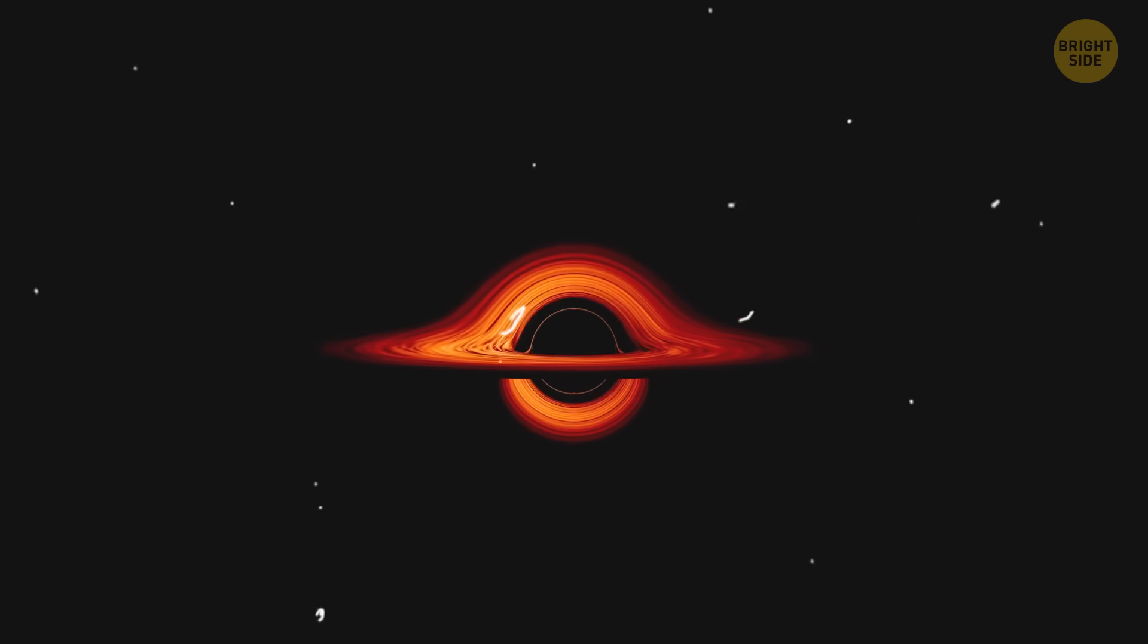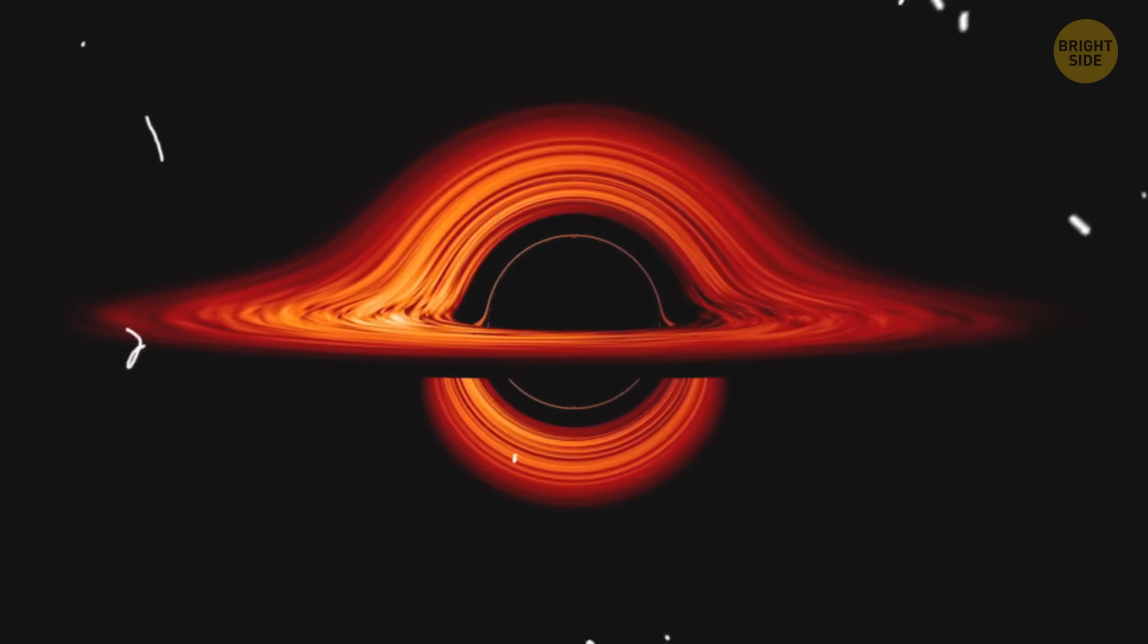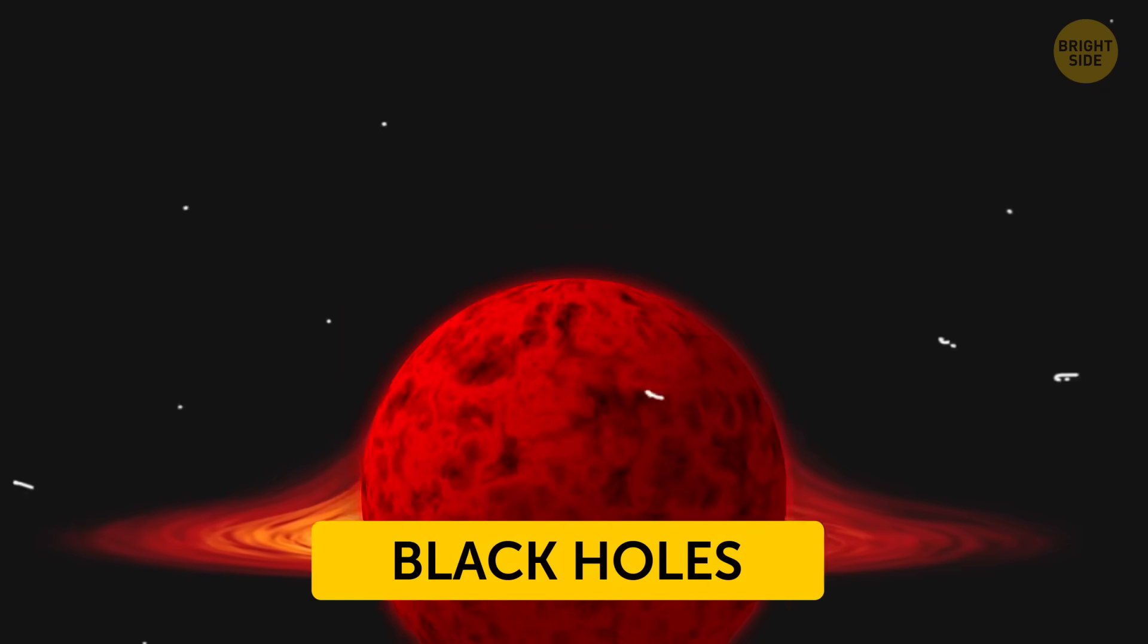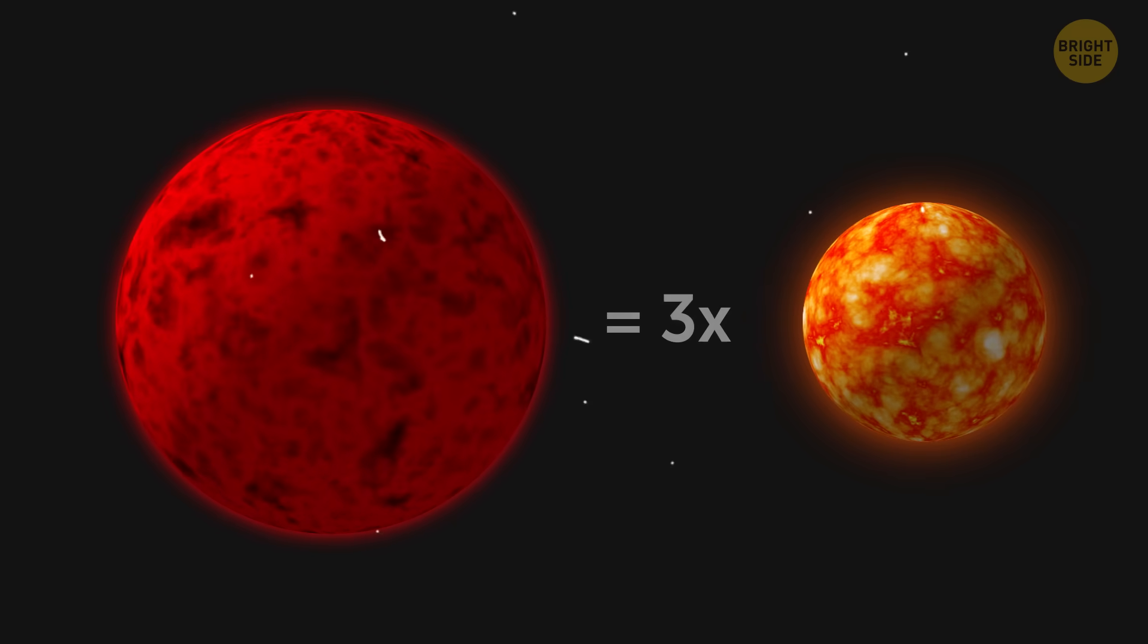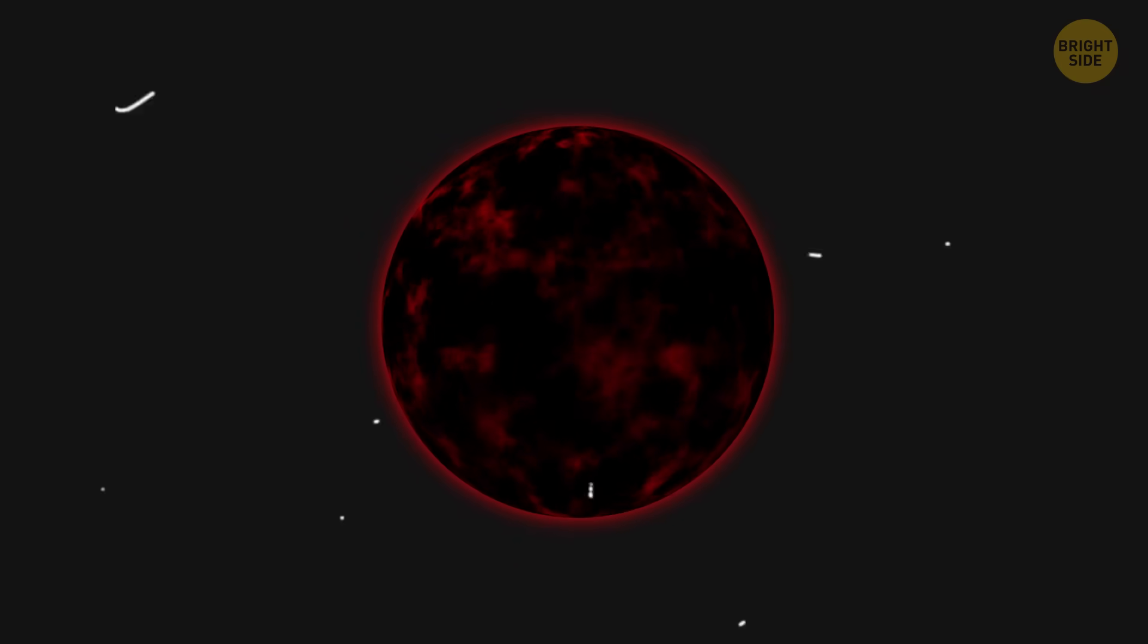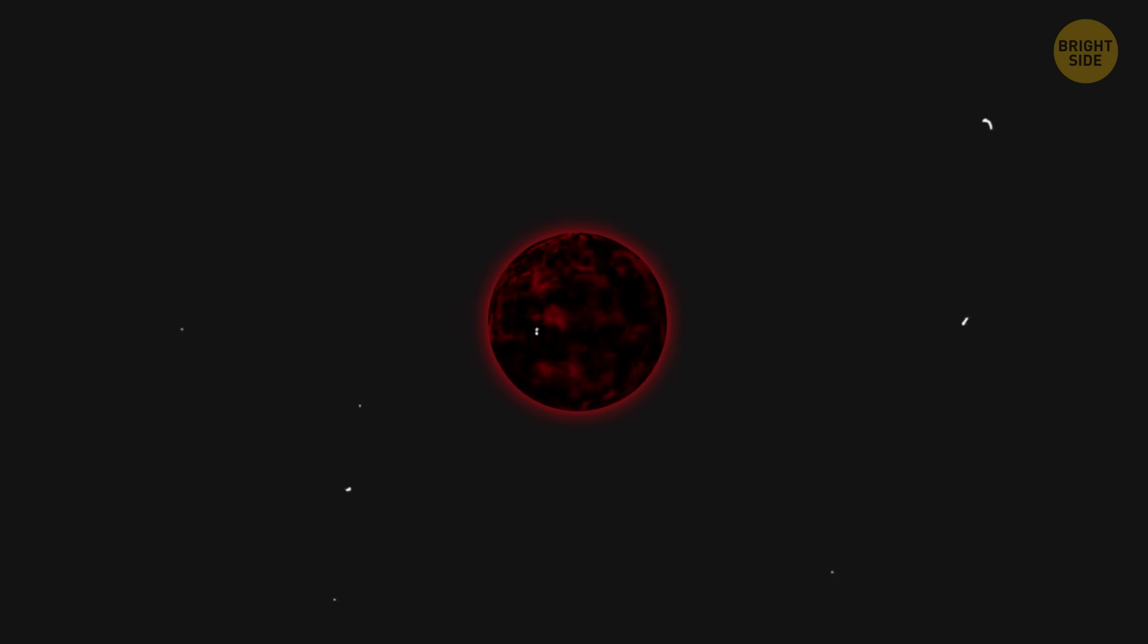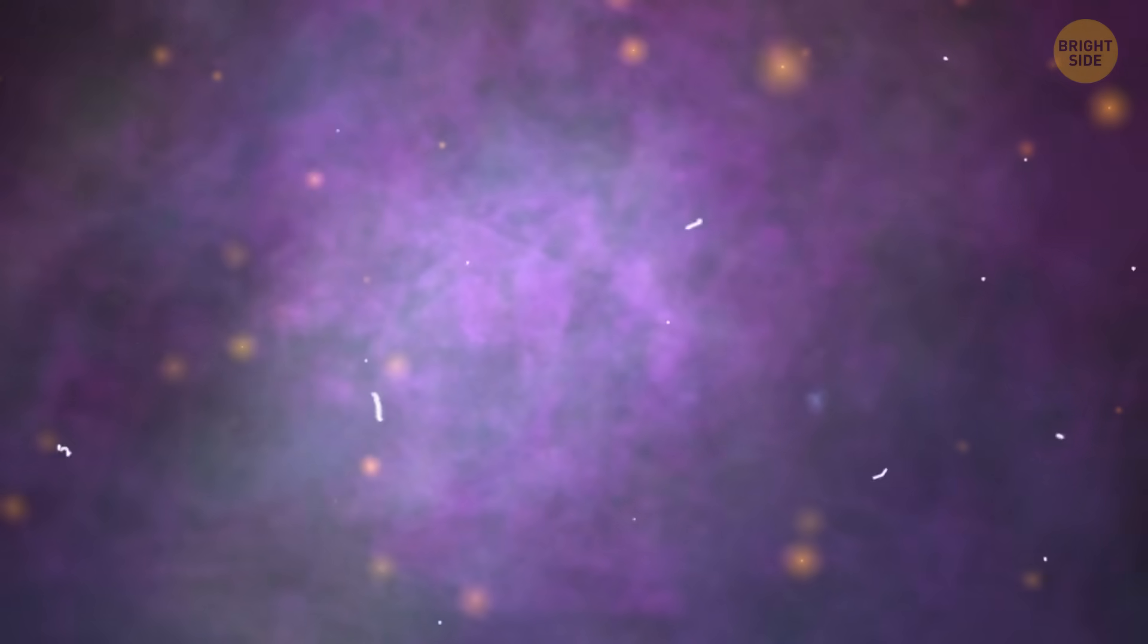Black holes are areas in space where gravity is so strong that nothing – not even light – can escape. That's why they're called black holes. It's believed that stars with at least three times the mass of our Sun can collapse under their own gravity once they run out of their stellar fuel. When a star has so much mass packed into such a small space, its gravity becomes so powerful that it forces everything, including atoms, to squish together. This intense density leads to the formation of a black hole.